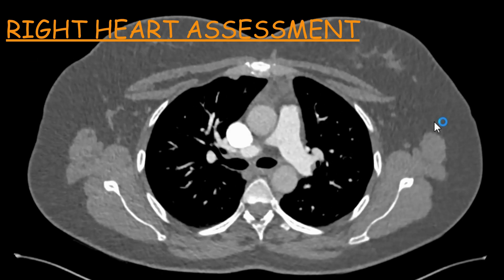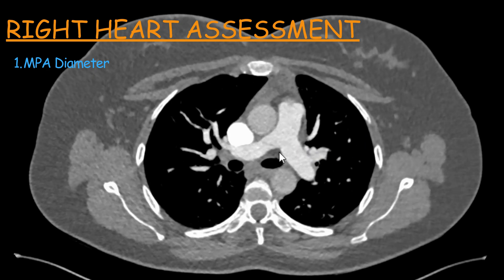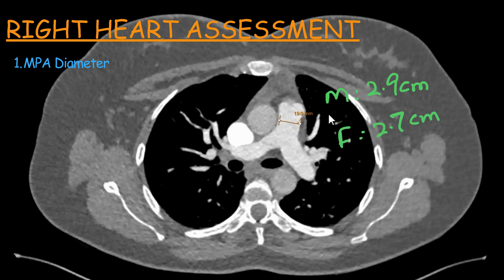How to assess elevated right heart strain? There are several things we can measure to evaluate the right heart chambers. One is the diameter of the main pulmonary trunk. To measure it, you choose a slice where the division into right and left main pulmonary artery is shown at the same level as the main pulmonary trunk — this is the ideal image. Then you measure the distance. In this patient it's about 1.9 centimeters. The normal upper limit is generally about 2.9 centimeters in males and 2.7 centimeters in females, but there can be a lot of variation.